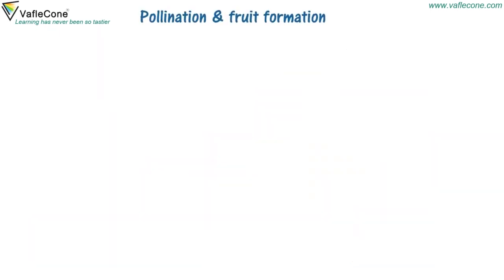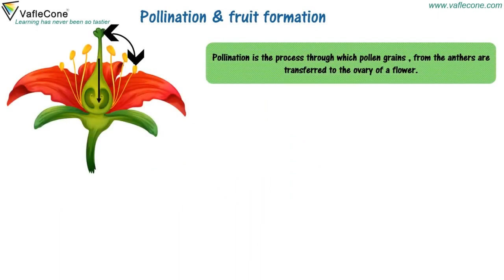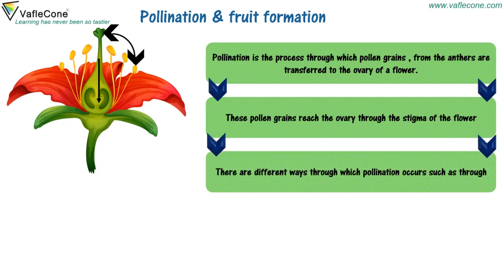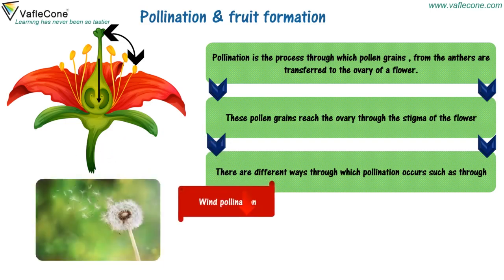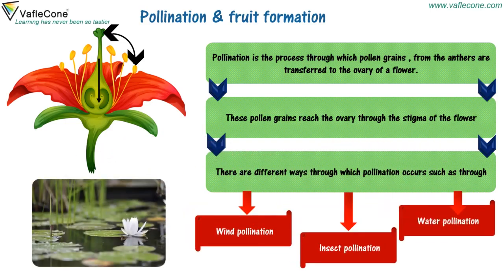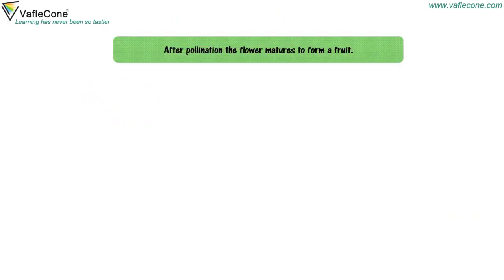Pollination and fruit formation. Pollination is the process through which pollen grains from the anthers are transferred to the ovary of a flower. These pollen grains reach the ovary through the stigma of the flower. There are different ways through which pollination occurs, such as through wind pollination, insect pollination, and water pollination. After pollination, the flower matures to form a fruit.